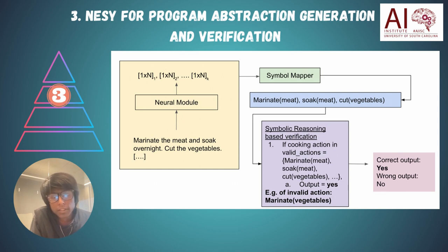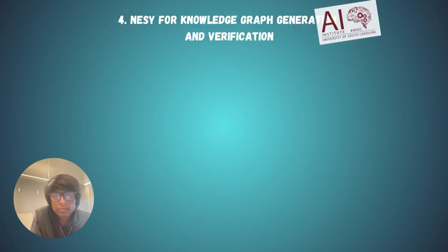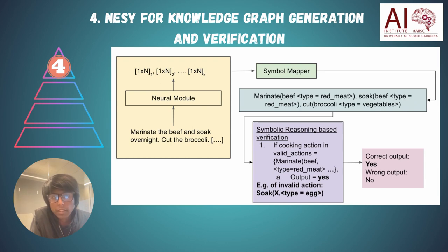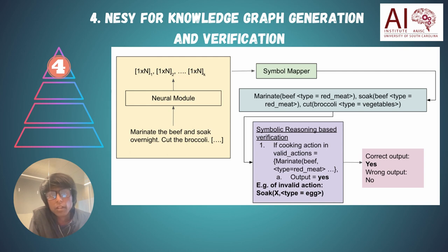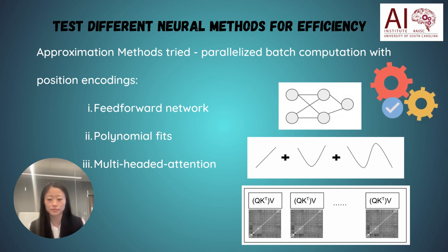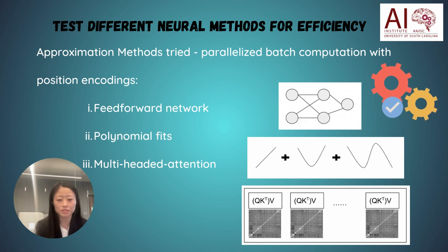The neural network can generate intermediate representations that can be mapped to single-arity functional descriptions that the symbolic reasoner can reason with. For the last level in the complexity hierarchy, we test if the neural network can generate not only single-argument functions but dual-argument functions, similar to triples in a knowledge graph, along with typing information. In our experiments we find that neural networks are able to generate dual-arity functional mappings which a knowledge graph reasoner or similar symbolic processor can use to verify the outputs.